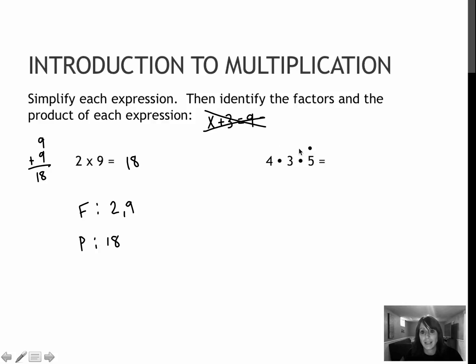For my second example, four times three times five. Again, we can multiply those in any order, but four times three would be 12. Twelve times five would give us 60. And so the factors are the numbers that I multiplied, four and three and five. And the product is the solution, which was 60.